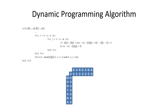Let me finish with a quick comment on runtime before the example. The runtime of this algorithm, just like the longest common subsequence, is dominated by the nested loop. We have two loops — one from 1 to N and one from 1 to M — so the runtime is O(N × M), which is straightforward to see since we fill in an N-by-M matrix.